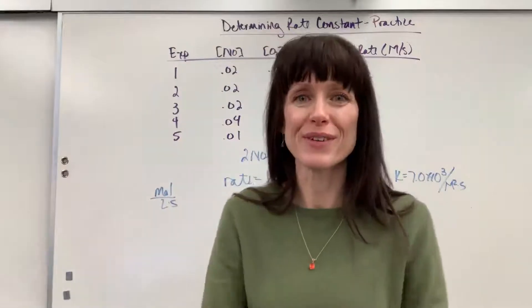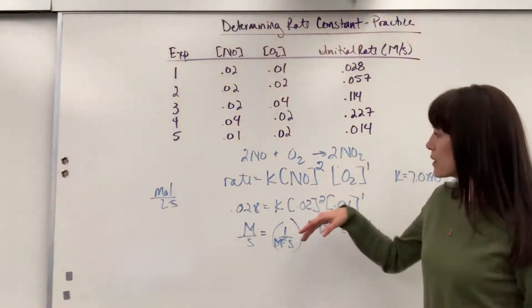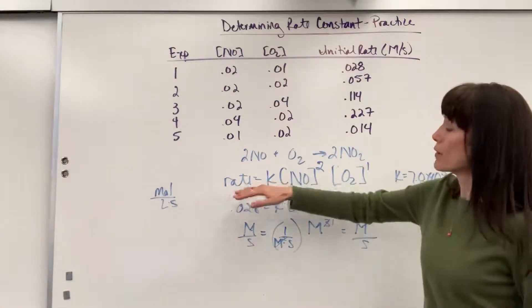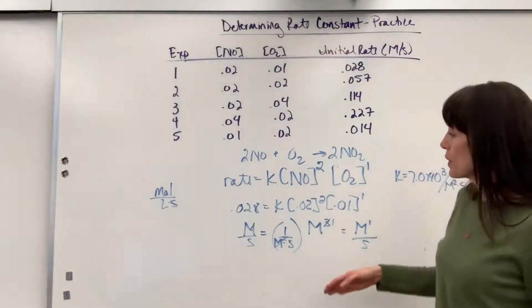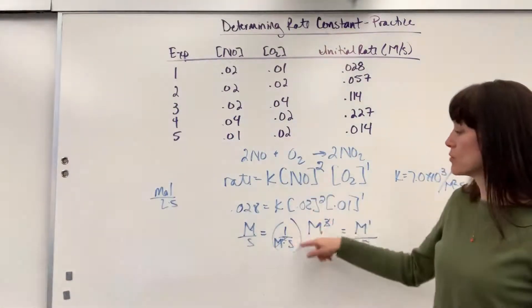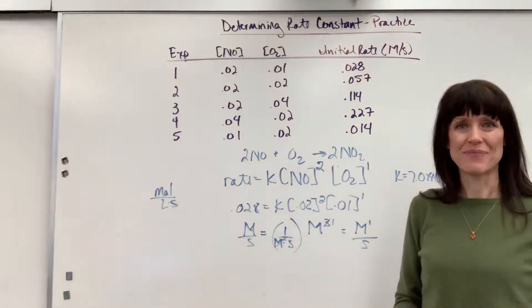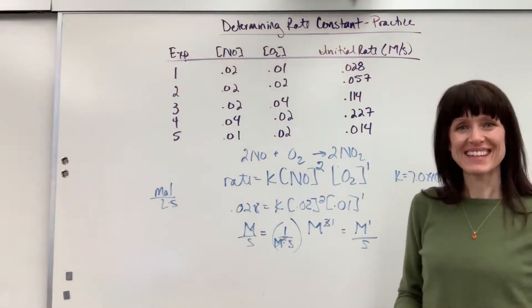Okay, nice. Good review. Pretty straightforward to find rate constant. Pick any trial and plug it into the rate equation. Then be really careful. Plug in the unit so you can find the unit of K. All right. Have a good day. Thank you.